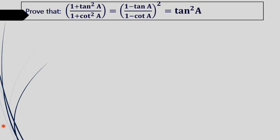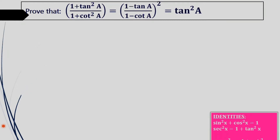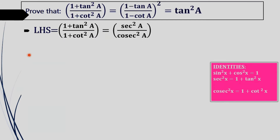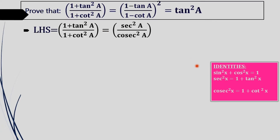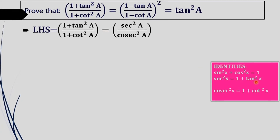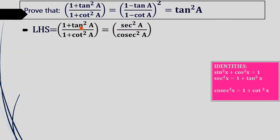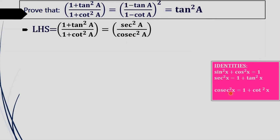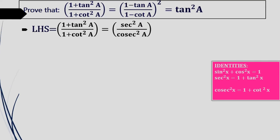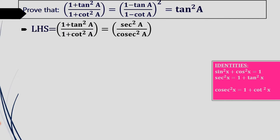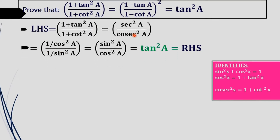Taking the first term as the LHS — that is (1 + tan²a) / (1 + cot²a) — we use the identity 1 + tan²x = sec²x, so the numerator becomes sec²a. The denominator becomes cosec²a using the identity cosec²x = 1 + cot²x.